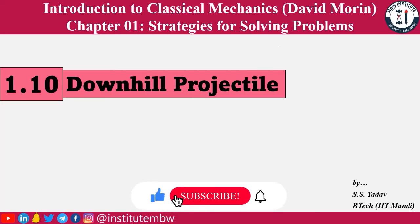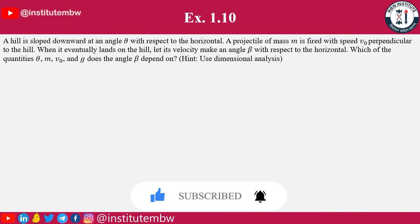In this video we will solve problem 1.10. In this problem we have a hill that is sloped downward at an angle theta with respect to horizontal, and a projectile of mass m is fired with speed v0 perpendicular to the hill. When it eventually lands on the hill, let its velocity make an angle beta with respect to the horizontal. We have to find out the dependence of beta on other quantities like theta, m, v0, and g.